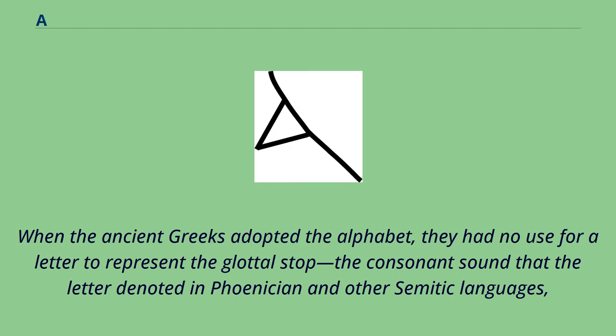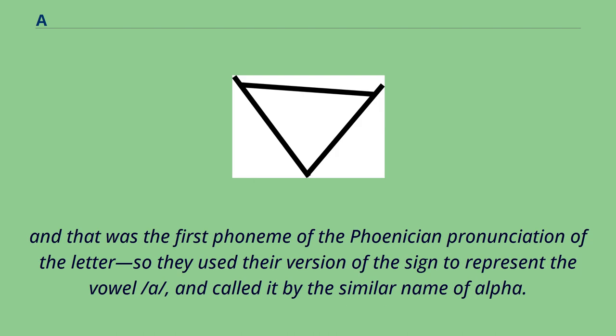When the ancient Greeks adopted the alphabet, they had no use for a letter to represent the glottal stop, the consonant sound that the letter denoted in Phoenician and other Semitic languages. That was the first phoneme of the Phoenician pronunciation of the letter, so they used their version of the sign to represent the vowel /a/, and called it by the similar name of alpha.